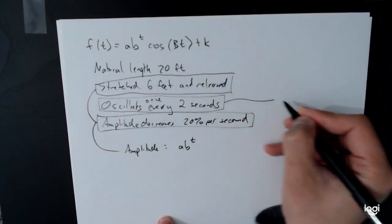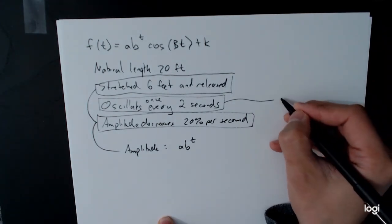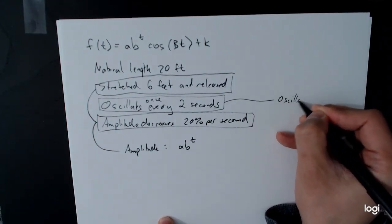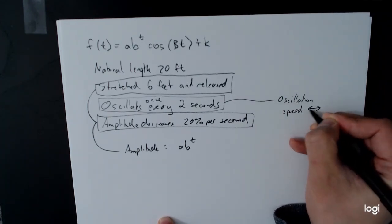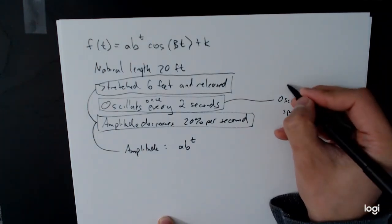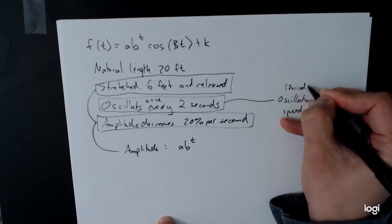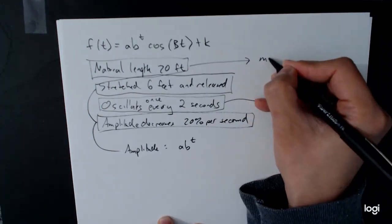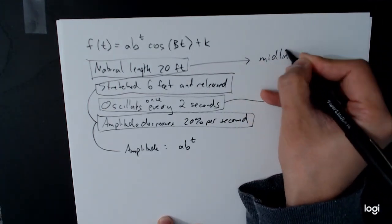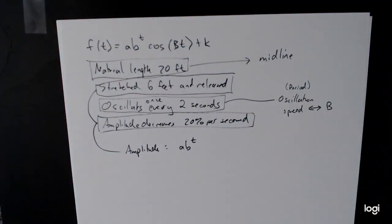The oscillates once every 2 seconds. This affects our b term, which is our oscillation speed, which relates to the b term. It changes the period as well. And then the natural length, this is our midline. This is the position it would be in if there's no vibration at all. So you can see that a lot of the bits and pieces fit together the way they fit together in the past. We now just have a little bit more work to do to bring the whole model together.